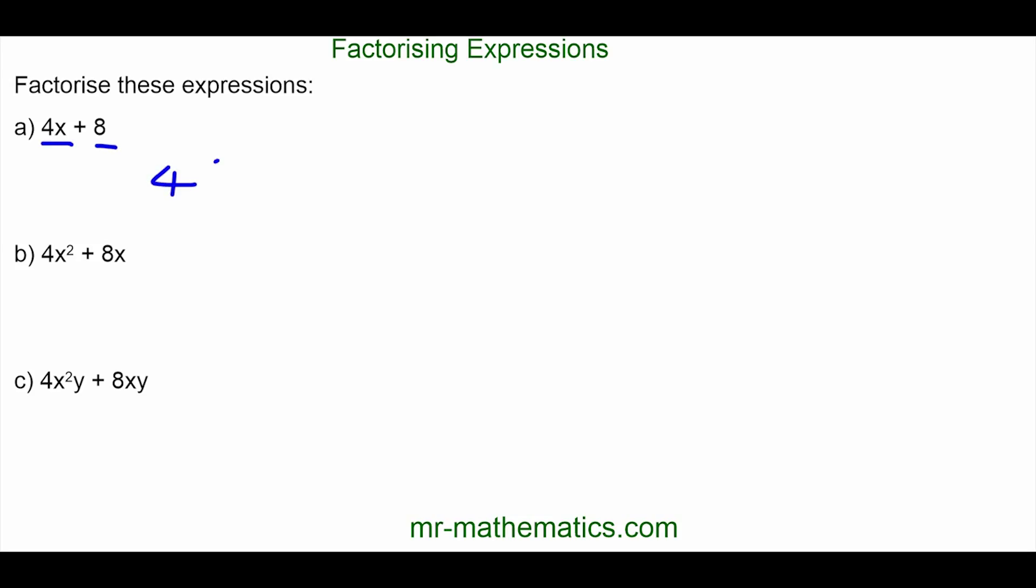In this question, you can see that 4 is common to 4x and 8, so we'll put 4 on the outside of the bracket, multiply it by x to make 4x and multiply it by 2 to make 8.